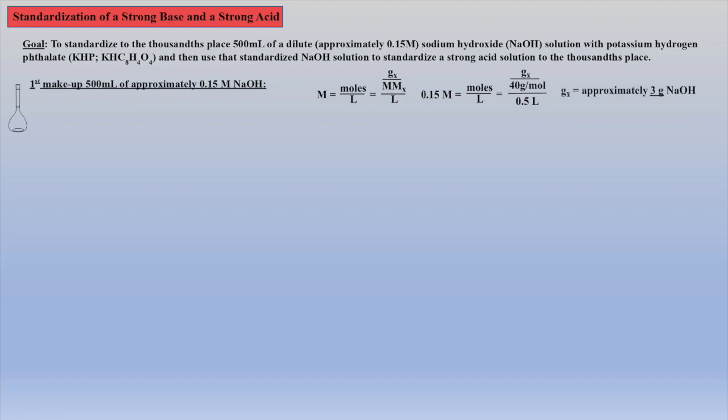First, we need to make 500 milliliters of an approximate 0.15 molar sodium hydroxide solution. Recalling our molarity equation and expanding moles within the numerator allows us to calculate that approximately 3 grams of solid NaOH are required to make 500 milliliters of a 0.15 molar solution of sodium hydroxide. Once a 500 milliliter volumetric flask is obtained, we fill it halfway with distilled water, add the 3 grams of solid sodium hydroxide, swirl to dissolve completely, cool if necessary, and dilute to the line.